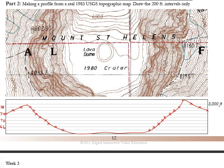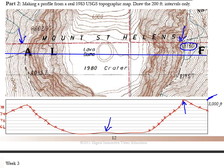Hopefully your profile looks something like this. You should have drawn a raised area where the lava dome is — even though the line doesn't go through the middle of the dome, it's on the edge so it probably raises up a little. Remember, the profile is based on the red line. If you had drawn your profile through the center of the lava dome it would have looked different — you would raise that dome even more. The highest point should appear on the right side, close to 8,200 feet.